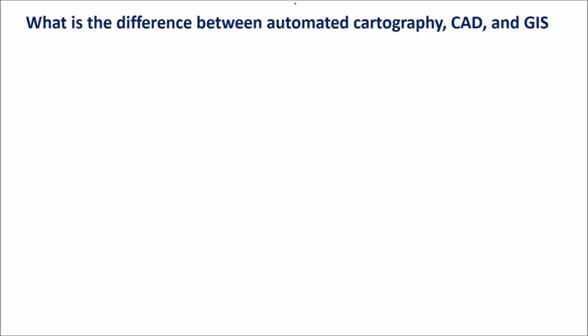What is the difference between automated cartography, CAD and GIS? Many people think that cartography plus one is GIS. They say GIS is what — you are doing cartography only. CAD is computer-aided design; you are using a computer for designing, making layers and making maps.